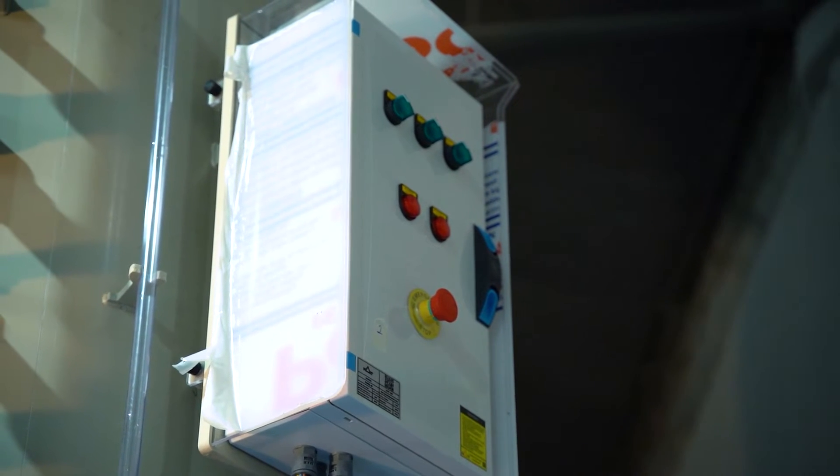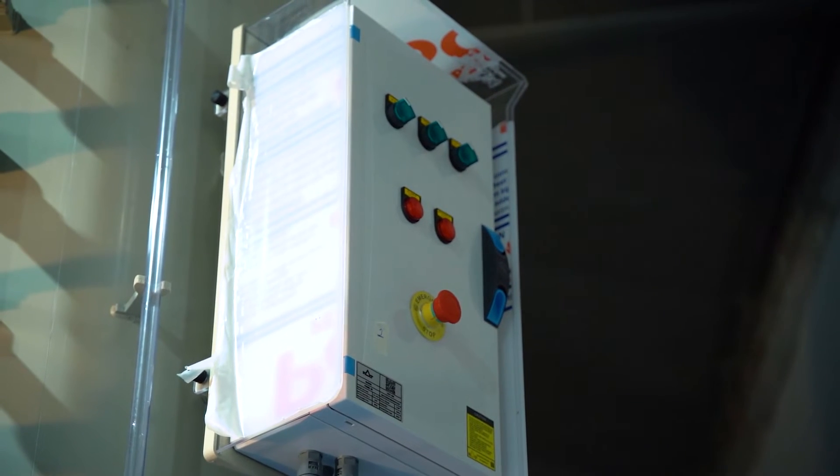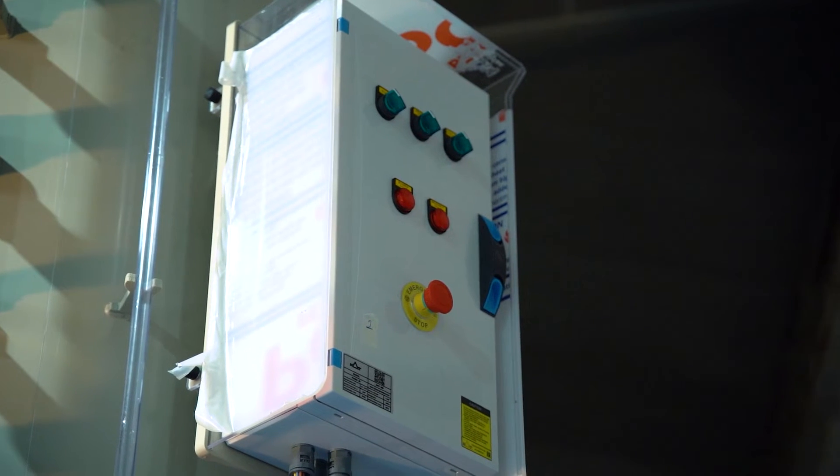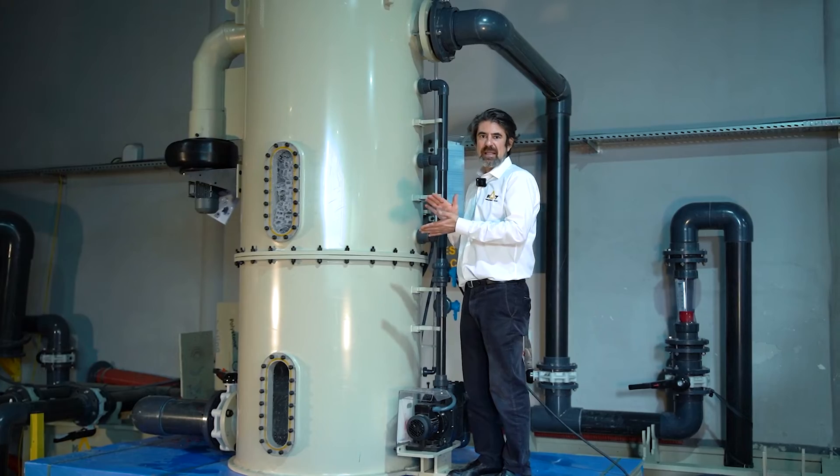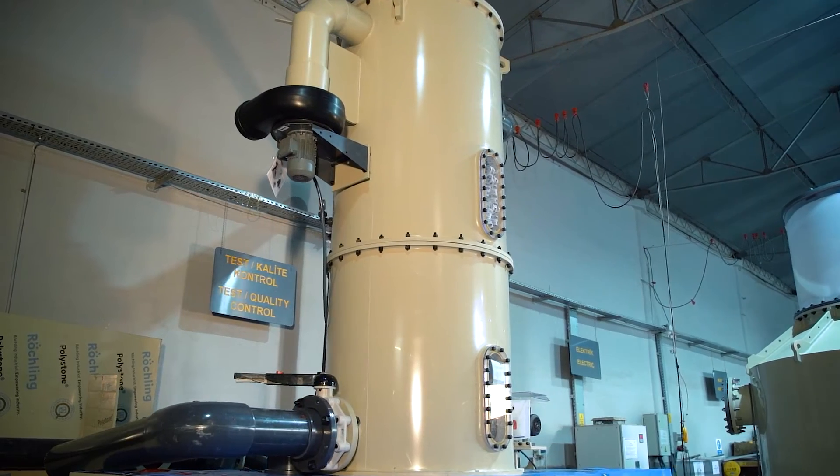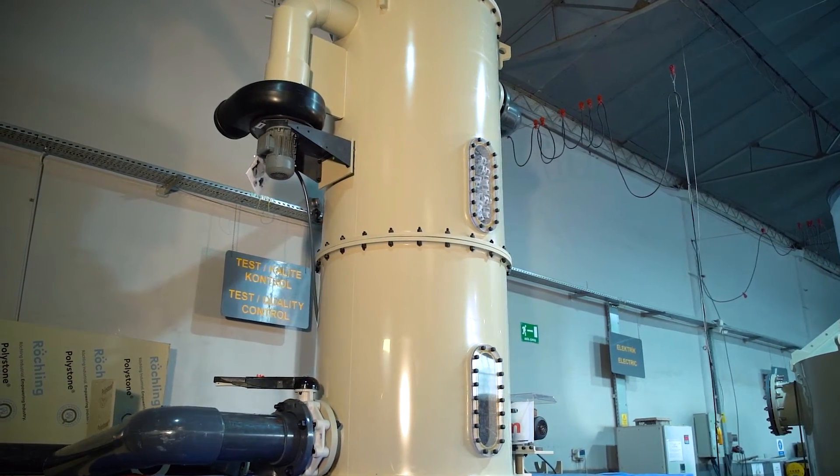Depending on the load, every day, once a week, or once a month, it's possible with our PLC and control units to run this pump autonomously, make a backwash inside the system, and get rid of all residues. This small unit can process 100 cubic meters per hour.